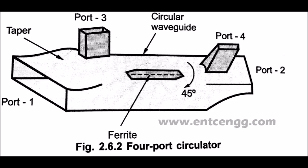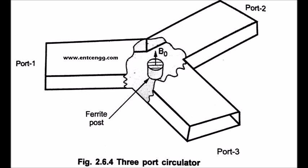Similarly, port 3 is coupled to port 4 and port 4 to port 1. A four-port circulator can be constructed using magic tees. A three-port circulator is a symmetrical Y-type junction of three identical waveguides with an axially magnetized ferrite post placed at the center.